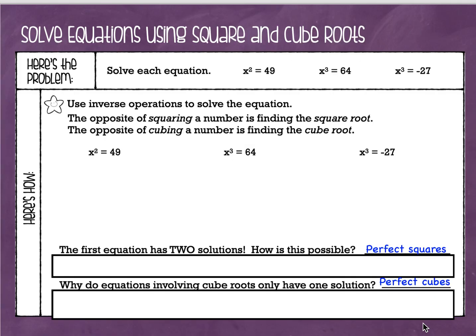Here's the problem. We are going to solve equations that have exponents: x squared equals 49, x cubed equals 64, and x cubed equals negative 27. Now before we start, let's highlight some important things. Just like any other equation that you solve, we're going to be using inverse operations. Remember, inverse means the opposite. The opposite of squaring a number — putting a number to the second power — is finding the square root. And the opposite of cubing a number — putting it to the third power — is finding the cube root. So we're just going to be going backwards.